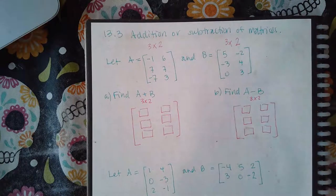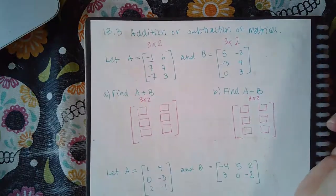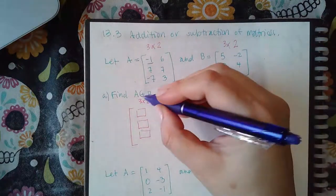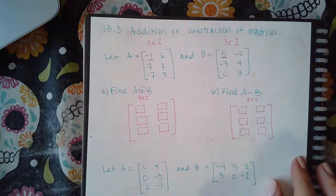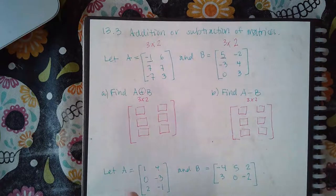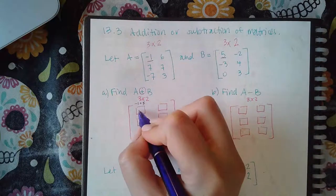And so, this one, you really take it term by term. So, the first term in the first row, first column, plus the first term in the corresponding term of the other matrix. Negative one plus five, which is going to be four.